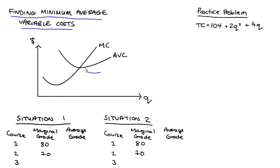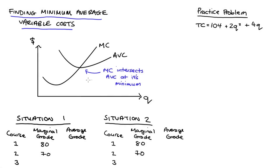That is the marginal cost function. I've drawn a typical marginal cost curve here. Marginal cost is MC. It intersects average variable cost — that's AVC — at its minimum. This result really means that in order to find the minimum of average variable costs, we just need to find our marginal cost function and our average variable cost function, and then set them equal to one another.